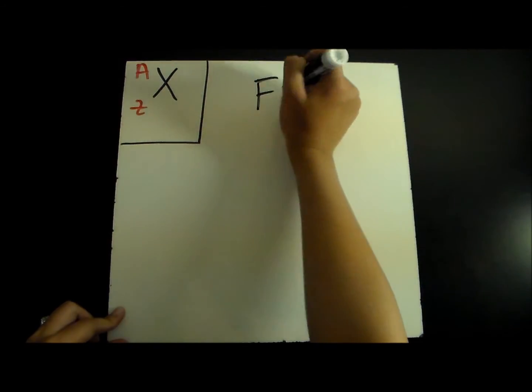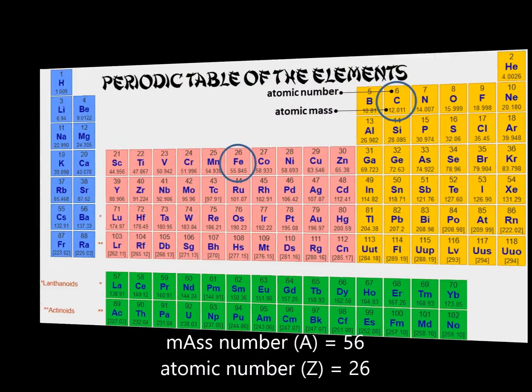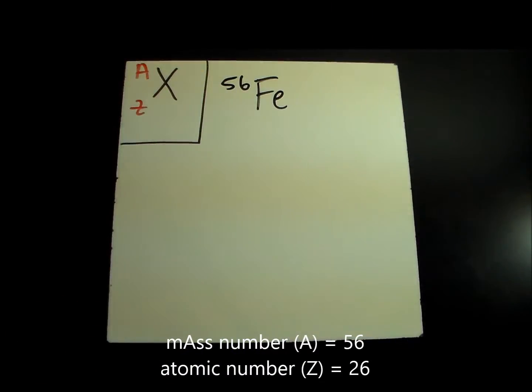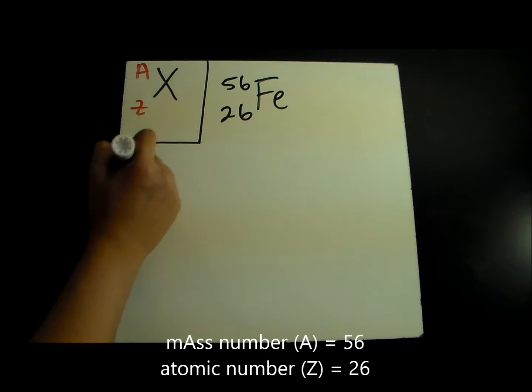Let's look at iron. It has a mass number of 56 and an atomic number of 26. So from A to Z, iron would be represented with 56 written at the top left and 26 at the bottom left.